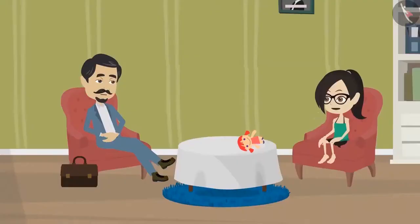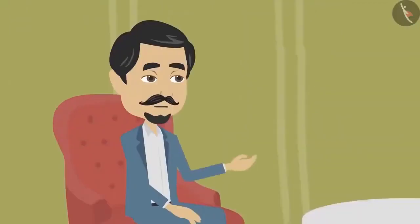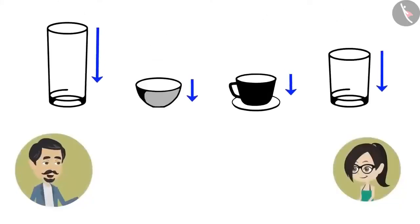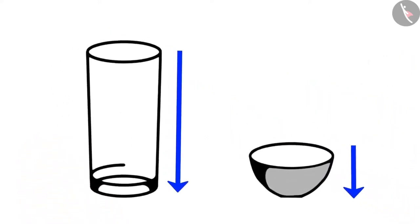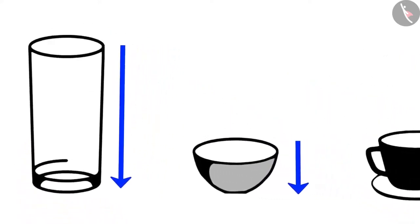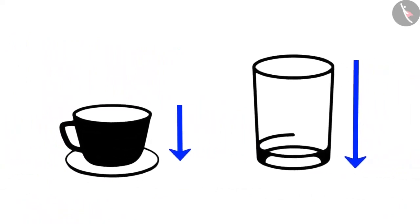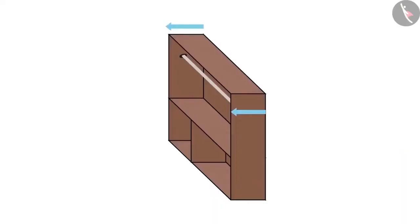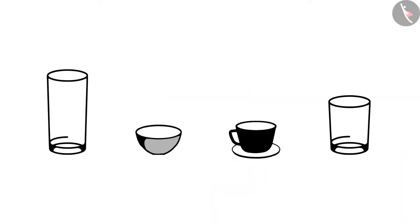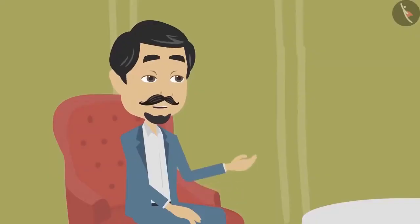Vandana realizes it is not necessary to measure only the depth of objects below ground. Papa confirms this. Depth is also measured in kitchen utensils because they are filled with goods — the deeper the utensil, the more quantity it can hold. The depth of a vessel helps determine what could be stored in it. Vandana has already discovered examples of pits, cupboards, and kitchen utensils.